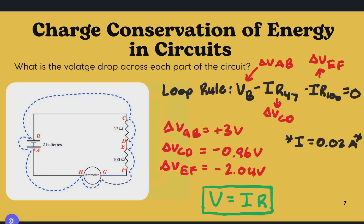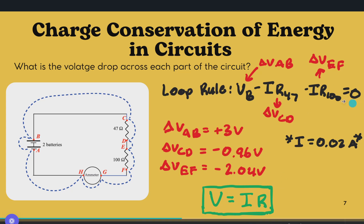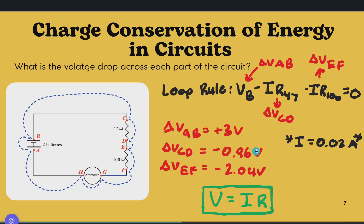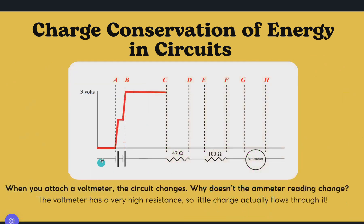What is the voltage drop across each part of the circuit? Using the loop rule: the voltage of B (delta V from A to B), minus IR47 (delta V from C to D), minus IR100 (delta V E to F), equals zero. So all the parts of the circuit sum to zero. Using V equals IR with I being 0.02 amperes, delta VAB is plus 3 volts, delta VCD is negative 0.96 volts, and delta VEF follows similarly. Adding all of these up should be around zero — there may be some rounding errors, but for the most part it should be around zero.